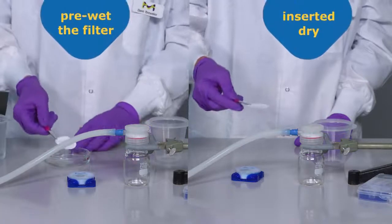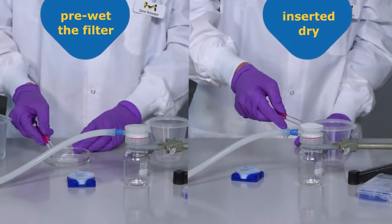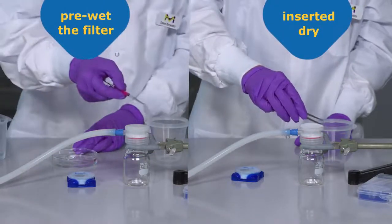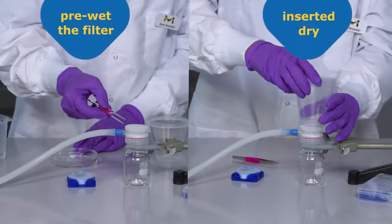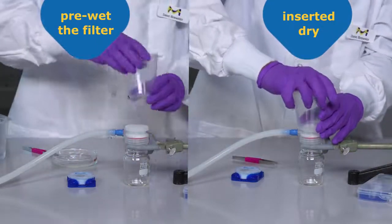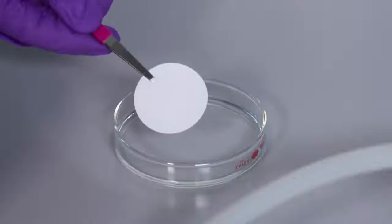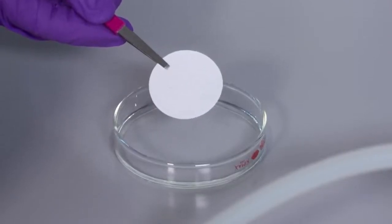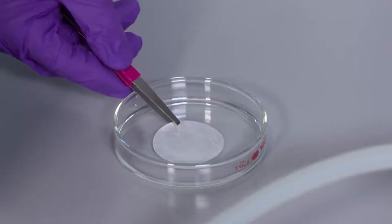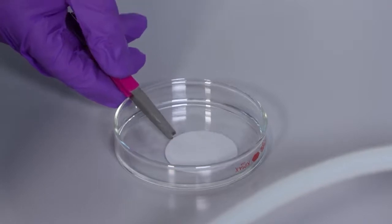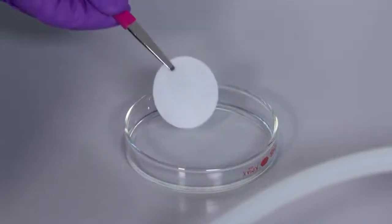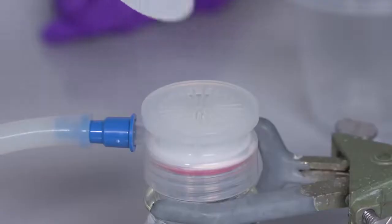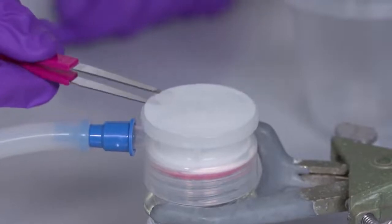When using the Natrix Q membrane you may choose to pre-wet the membrane or insert it in the setup dry. In this case we will pre-wet the membrane with Millipore deionized water. We will then insert the pre-wet membrane into the Millicupflex assembly on the receiving container.